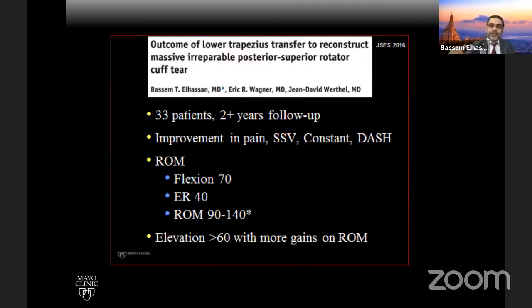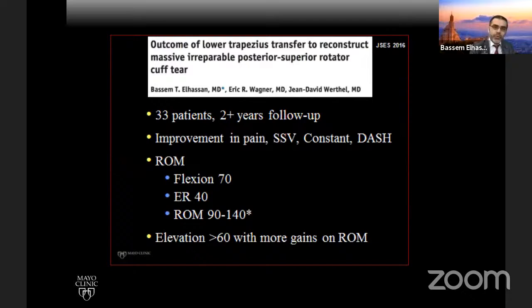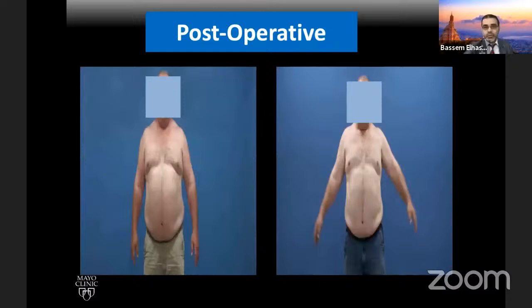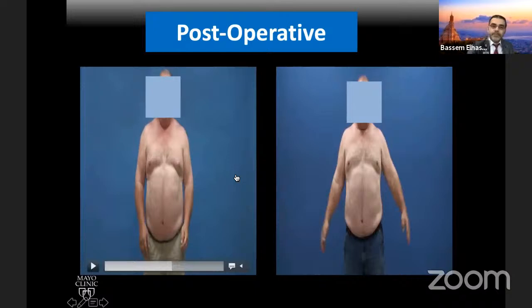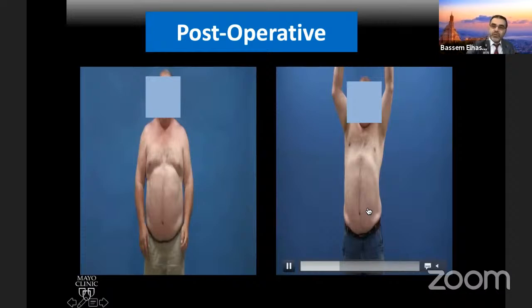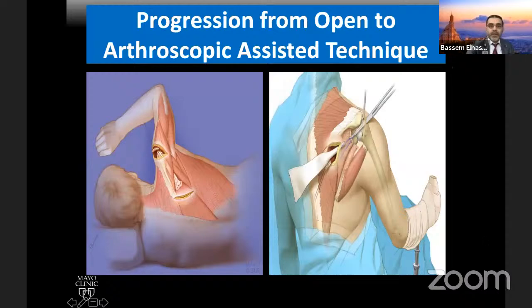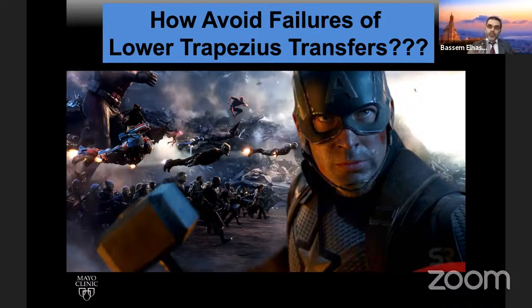We progressed from open to arthroscopic-assisted approach — what we call SALT: Scope-Assisted Lower Trapezius transfer. Since COVID we have received many questions about this technique, and we will address how to avoid failure. Patient selection is very important. Most patients I do are young and active with massive irreparable posterior superior rotator cuff tear with advanced fatty atrophy, often no teres minor, limited external rotation requiring elbow extension to compensate, proximal migration, and mild arthritis.